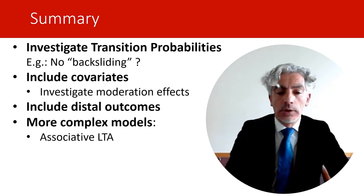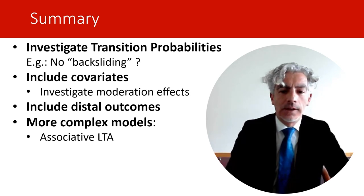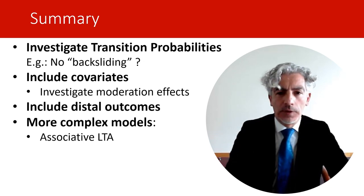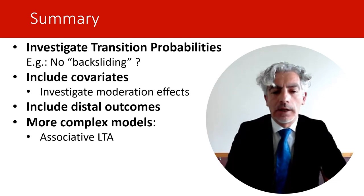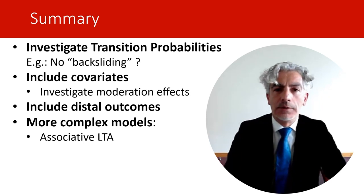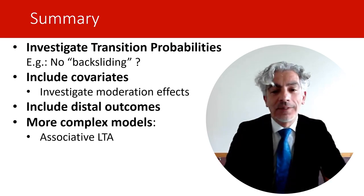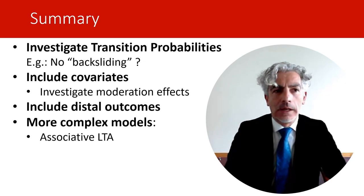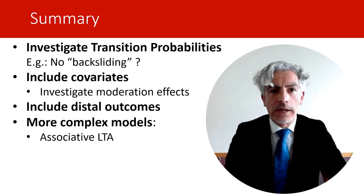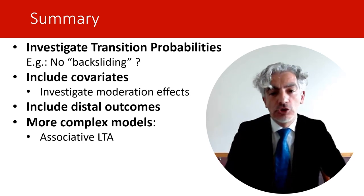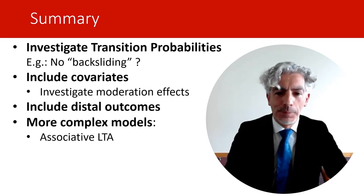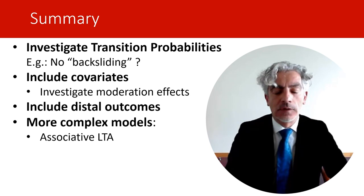We can also easily include distal outcomes to test whether membership in some latent classes at some time points affects other outcomes later on. Finally, we can develop more complex models using associative latent transition analysis — looking at how person-centered changes across one process, such as changes in mental health status from one age to another, may affect changes in another process. I have provided more material and exercises together with these presentations. I hope this is useful — thank you very much for your attention.